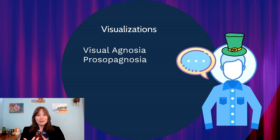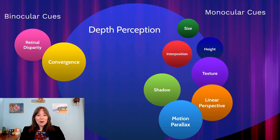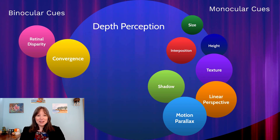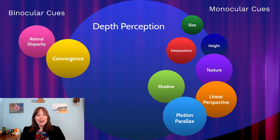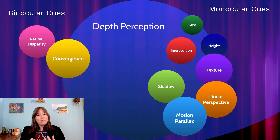Visual agnosia isn't the only way sighted individuals vary in perception. Another area of individual differences is depth perception — how near or far objects are. We use many different techniques, some are binocular cues requiring two eyes, and some are monocular cues requiring only one eye.